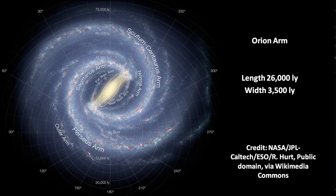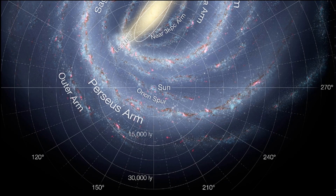The Orion Arm is a minor spiral arm of the Milky Way galaxy. It has a length of over 26,000 light years and a width of 3,500 light years. The inner end of the Orion Arm is difficult to see from our point of view within the disk. The Orion Arm may be a side alley of the main Sagittarius Arm, or it could be a completely independent structure.